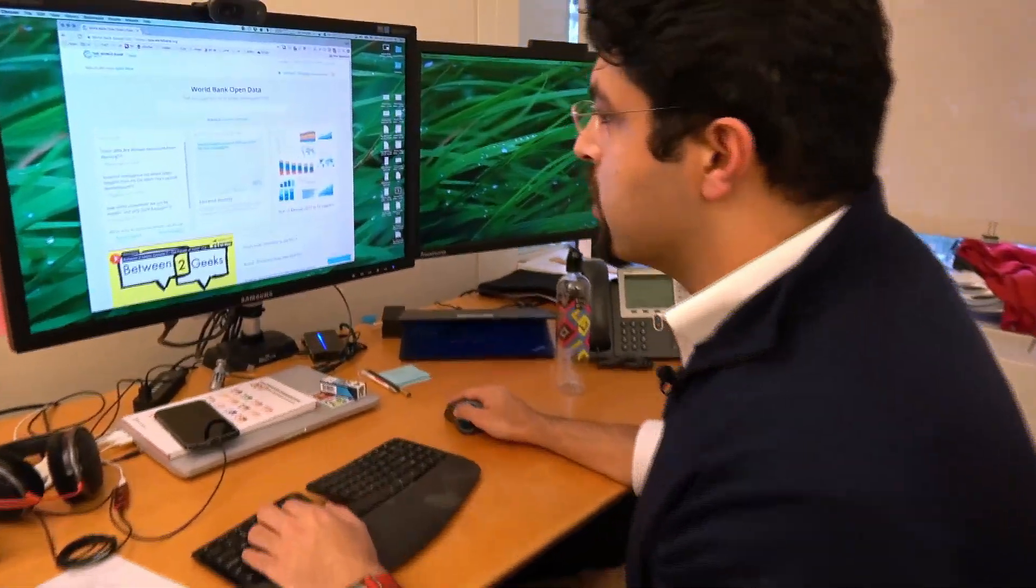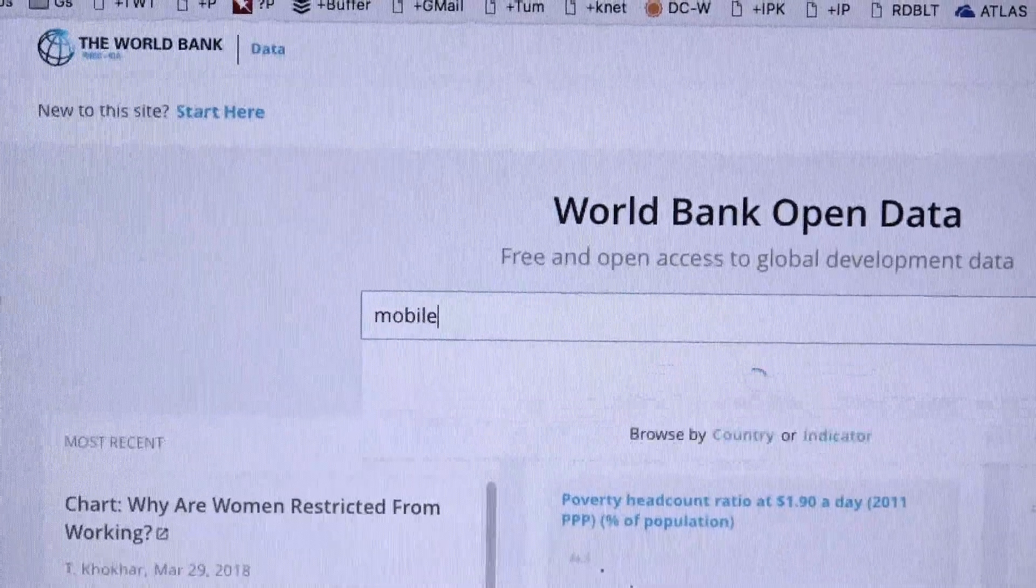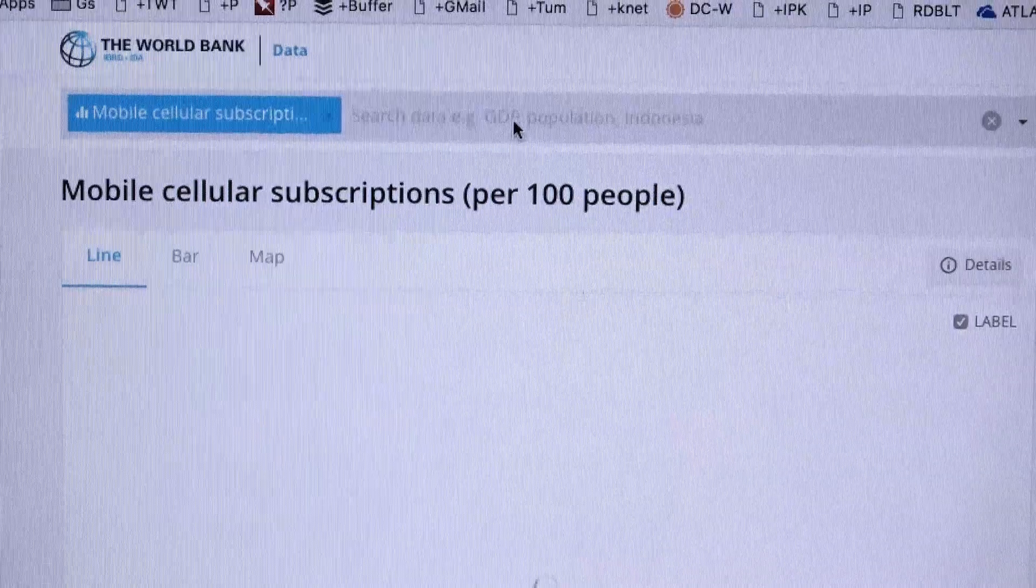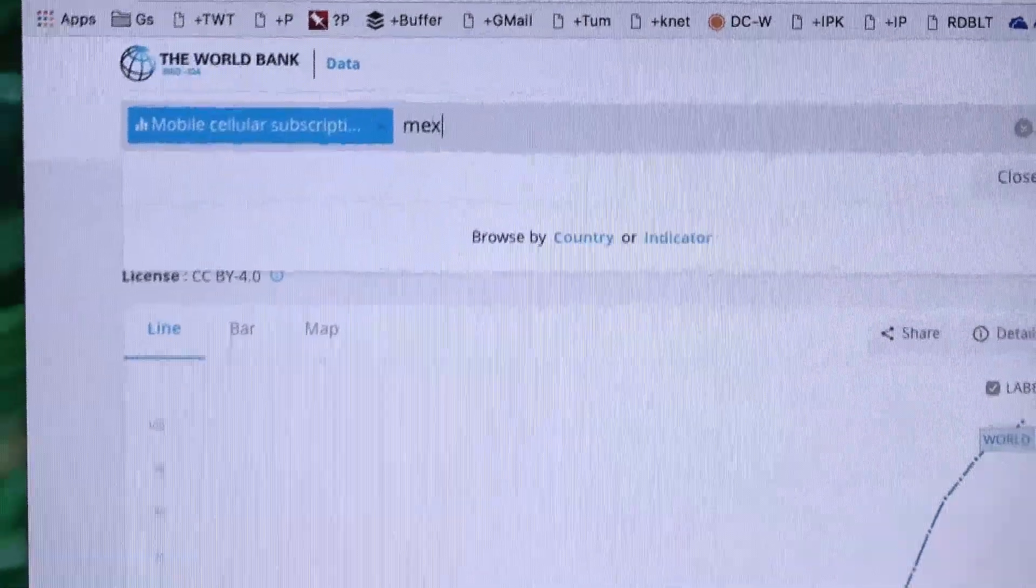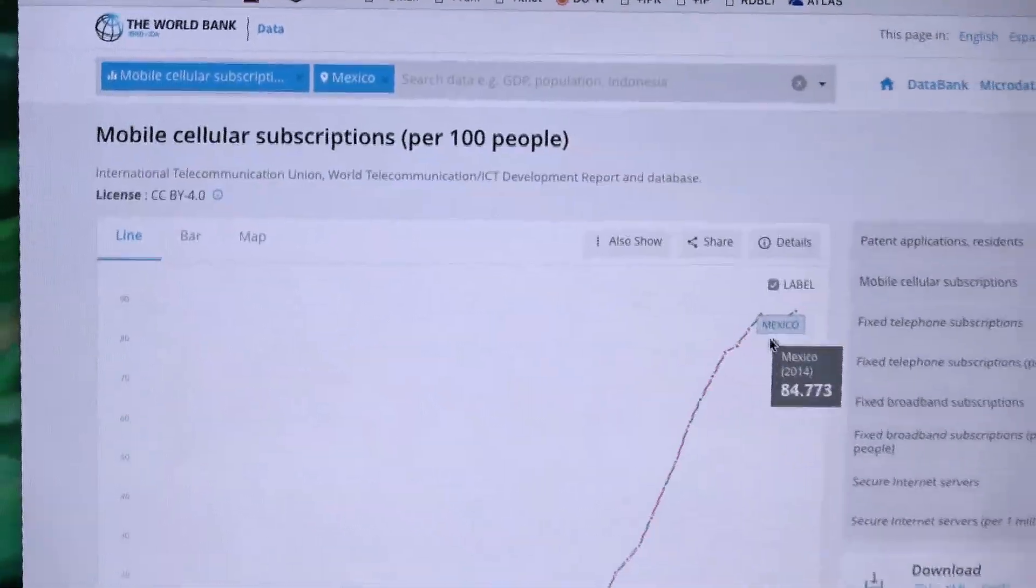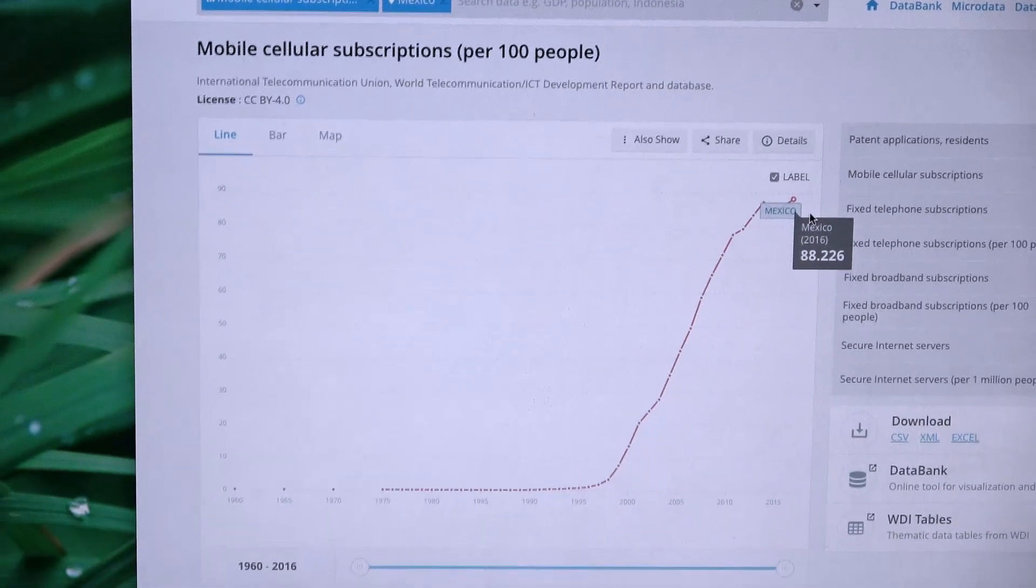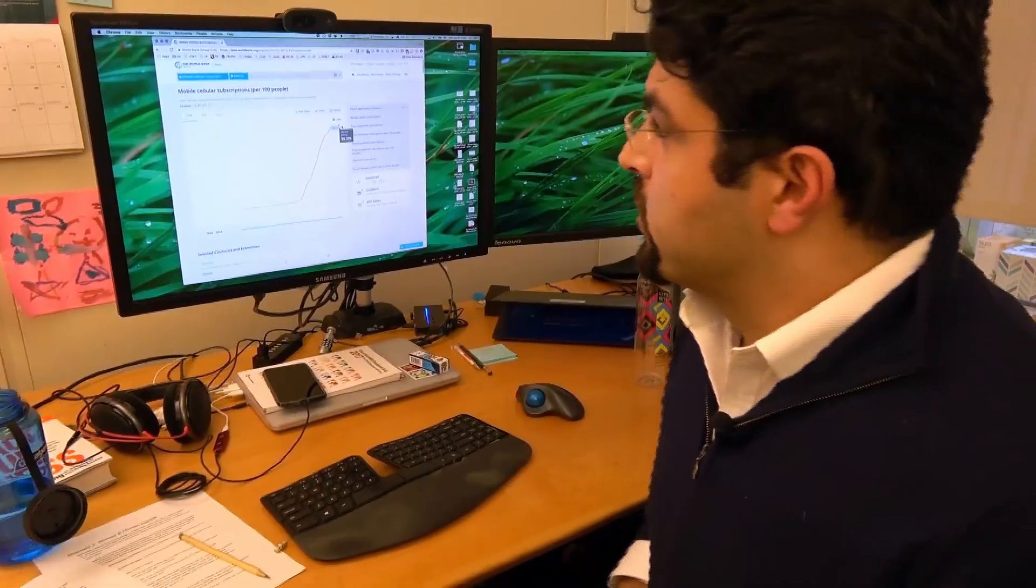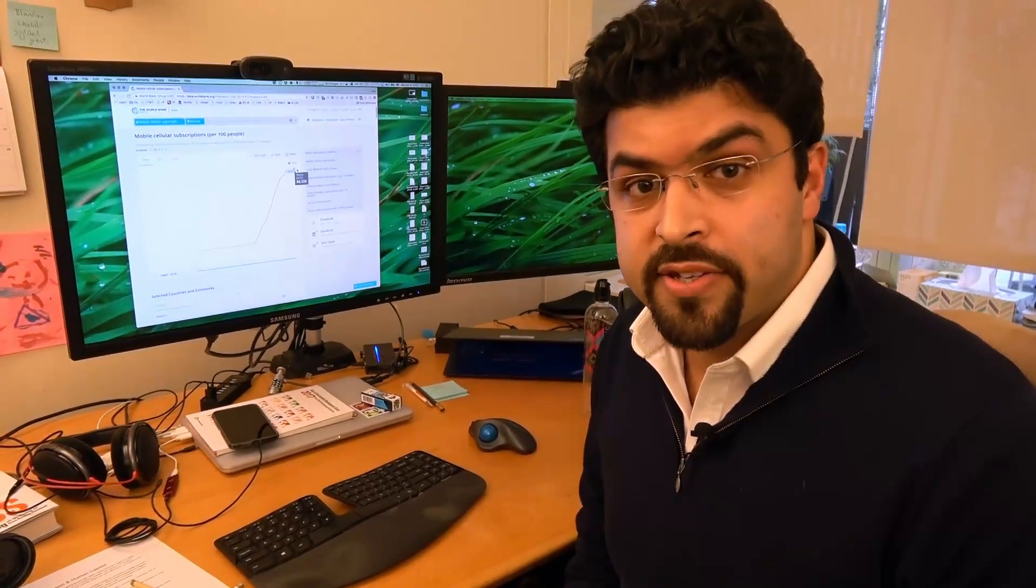Let's say I wanted to know how many people in Mexico have mobile phones. I can type in mobile phone subscriptions, and then punch in Mexico. And I see that for the latest year available, 2016, there are 88 mobile phone subscriptions per 100 people in Mexico.